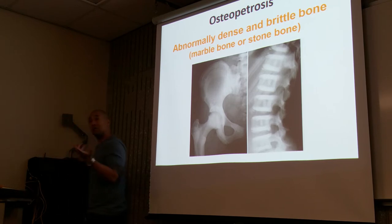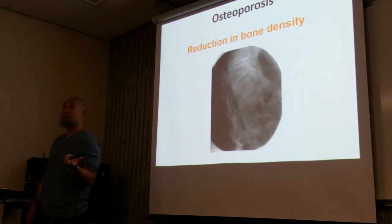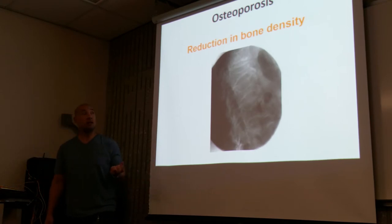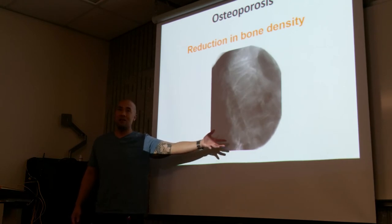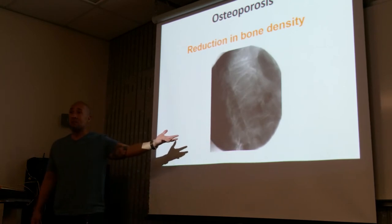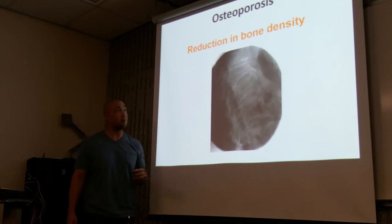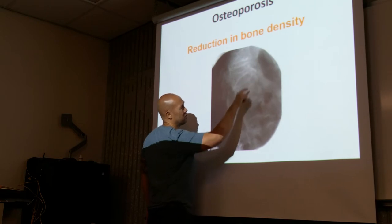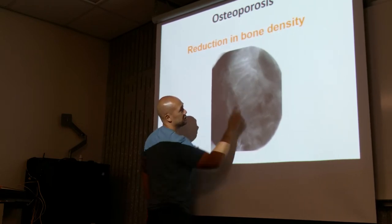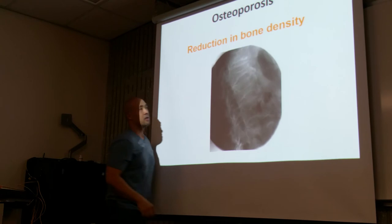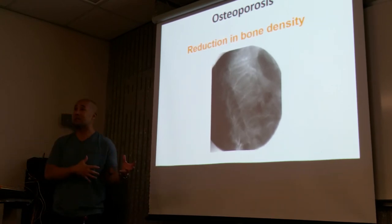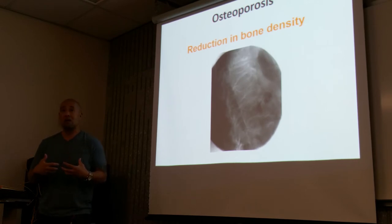What's the opposite of osteopetrosis? Osteoporosis — low bone density. Bone should be white, but here it's very gray. You can see the vertebral body, which should be nice and rectangular, showing compression fractures caused by the decreased density of the bone. All that weight it's trying to support causes the bone to collapse and compress.